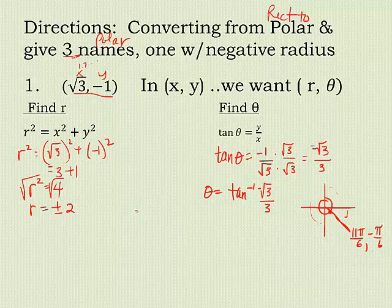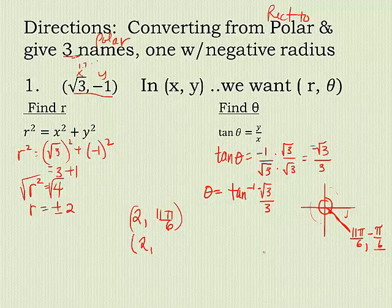So r would be positive 2, because x's are positive here. And 11π over 6. There's my first coordinate pair. The second one, the radius stays the same. The theta value is the negative name of the same angle. So it's negative π over 6.